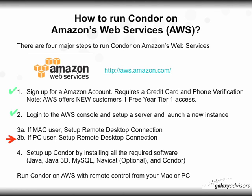Just to re-cover the major steps: there are four major steps to run Condor on Amazon Web Services. You've already completed signing up for an Amazon account, logging into the AWS console, setting up a server, and launching a new instance. Now we're at step 3b because you're a PC user and want to set up remote desktop connection. If you're a Mac user, stop this video and go back to find step 3a.